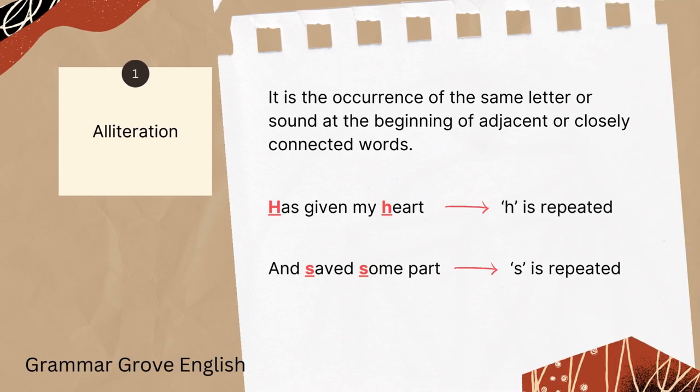What is alliteration? Alliteration is the occurrence of the same letter or sound at the beginning of adjacent or closely connected words. Whenever there are words that start with the same letter or same sound placed closely together or side by side, that is alliteration. Here we see alliteration in two places: first, in the line 'has given my heart' — 'has' and 'heart' both start with the letter H. And in the line 'and saved some part' — 'saved' and 'some' both start with S and are sitting side by side.